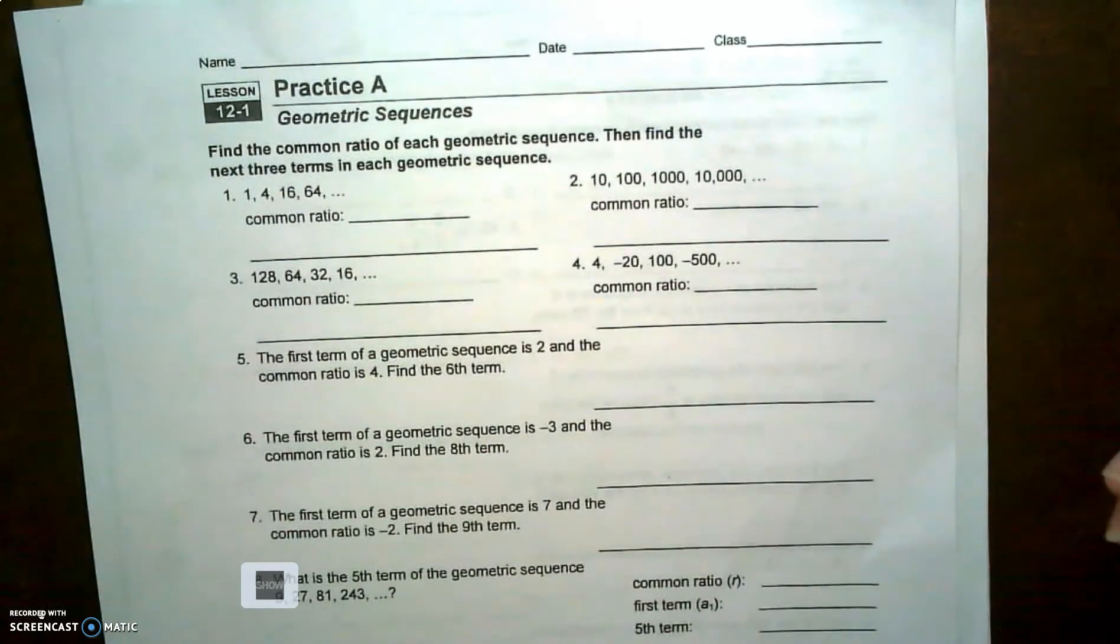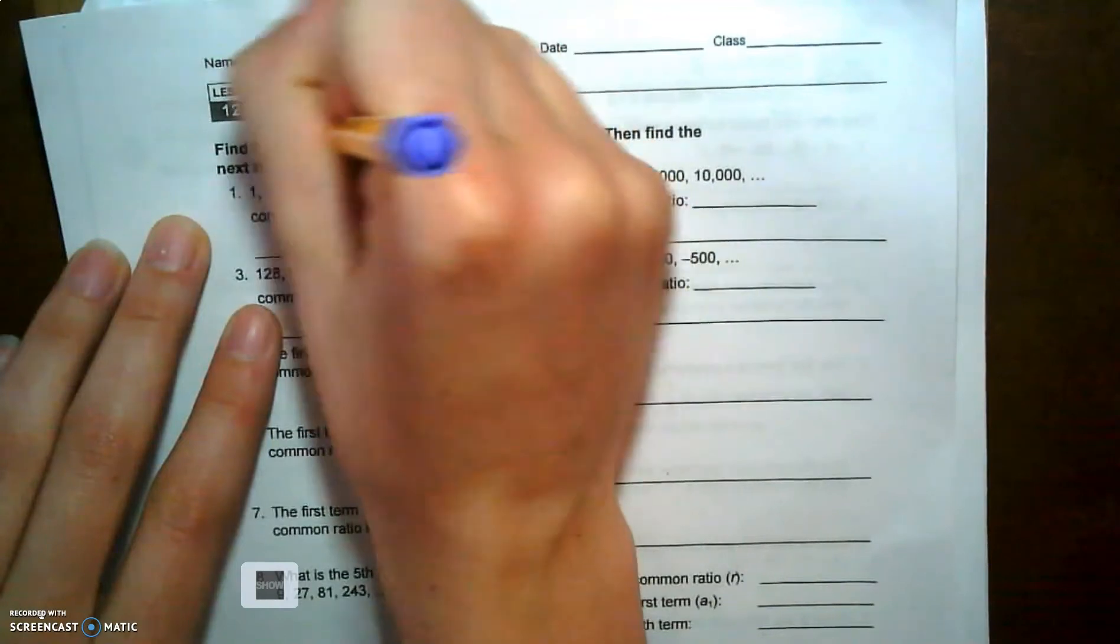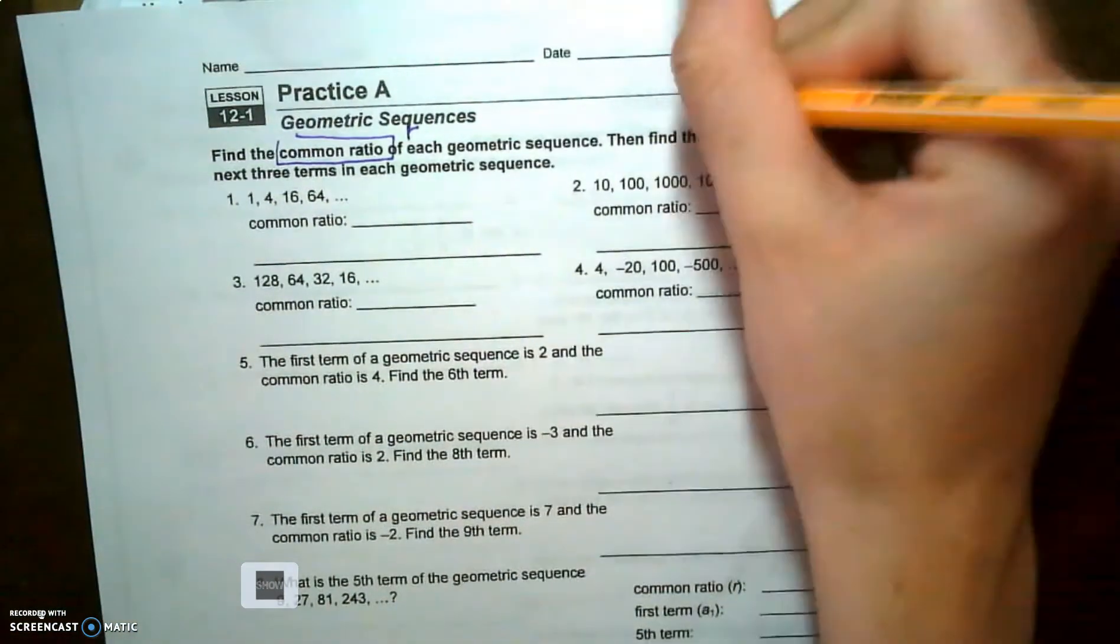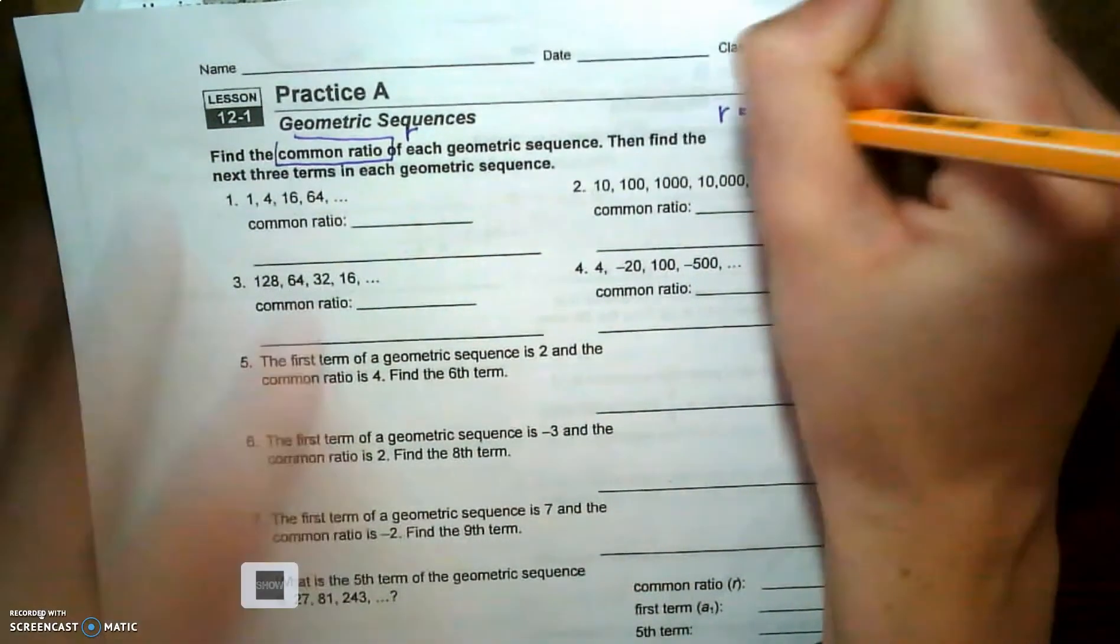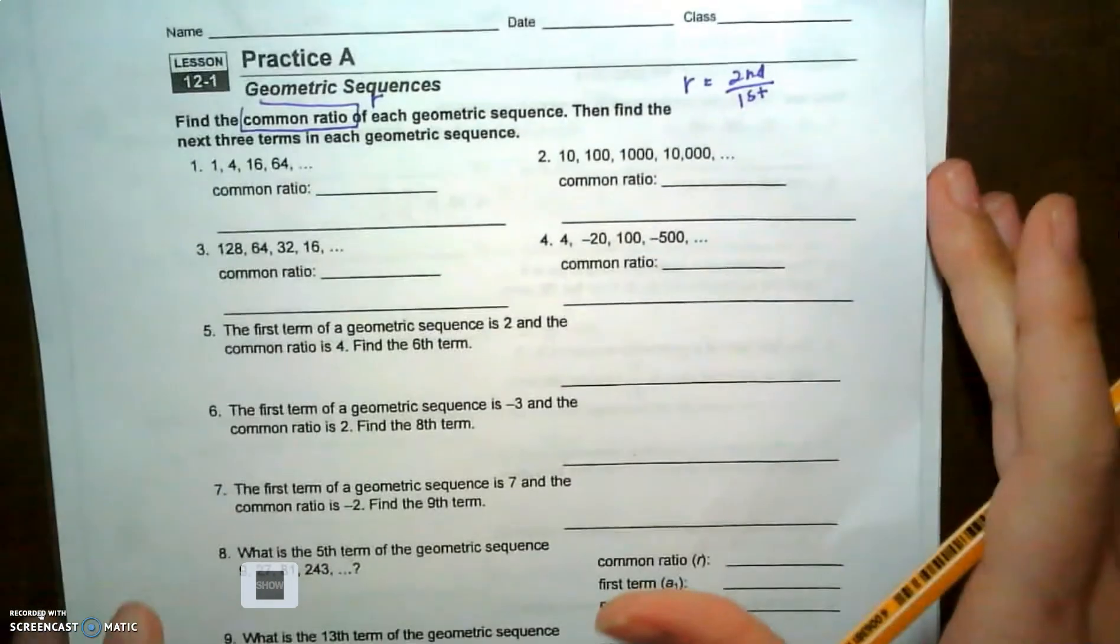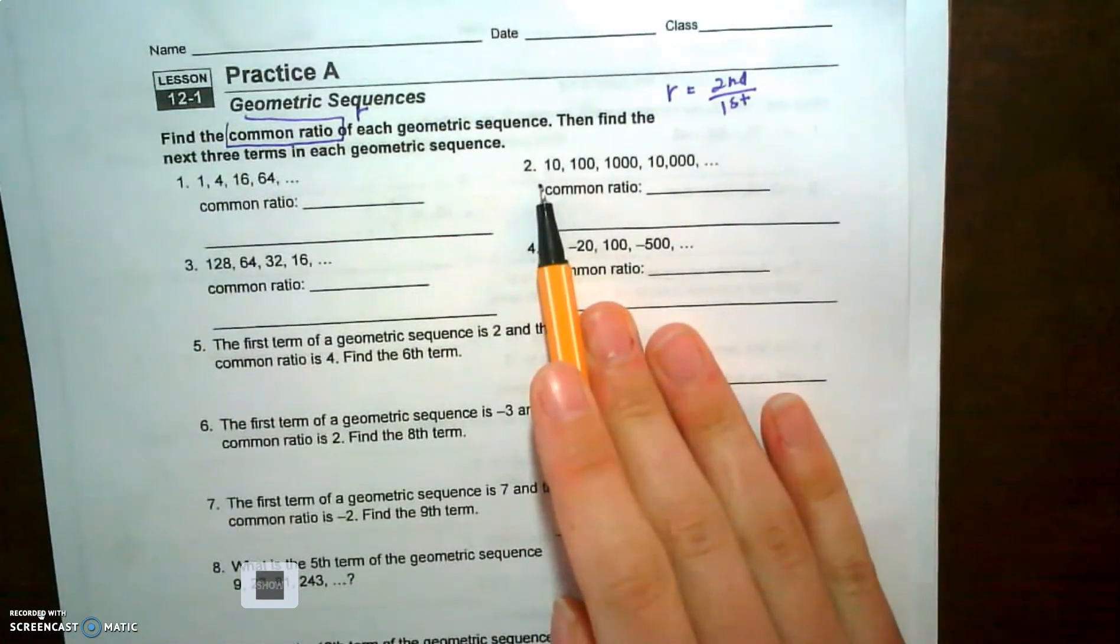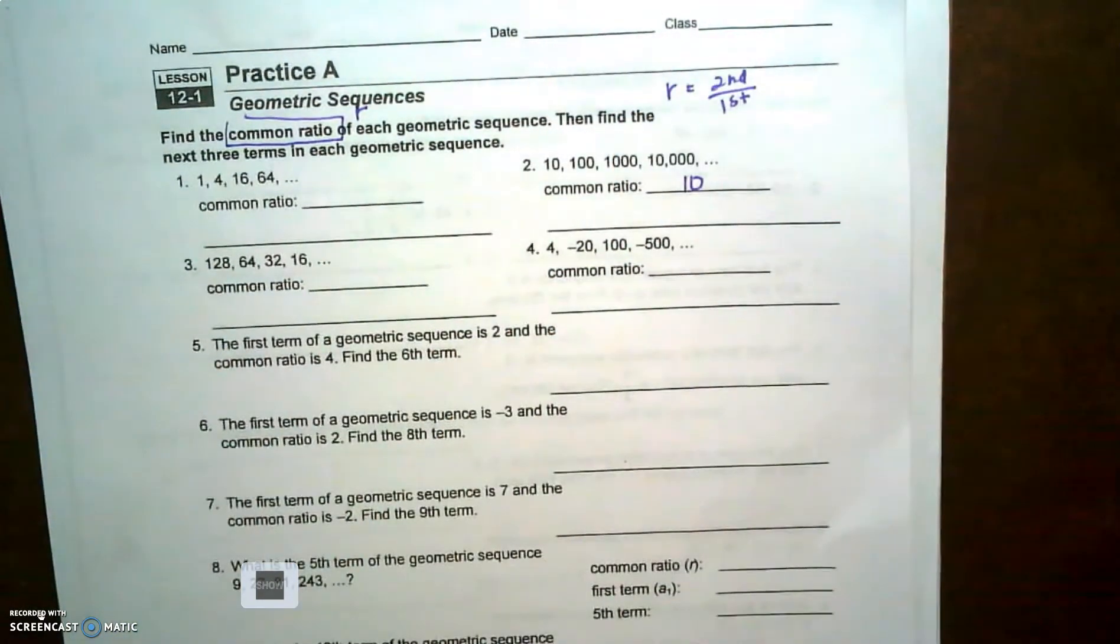Remember that common ratio is that r value, and we can find r by taking that second term and dividing it by the first. If you're having a hard time finding that pattern in your head, so if we take a hundred and divide it by ten, we're gonna get ten, so the common ratio is ten.